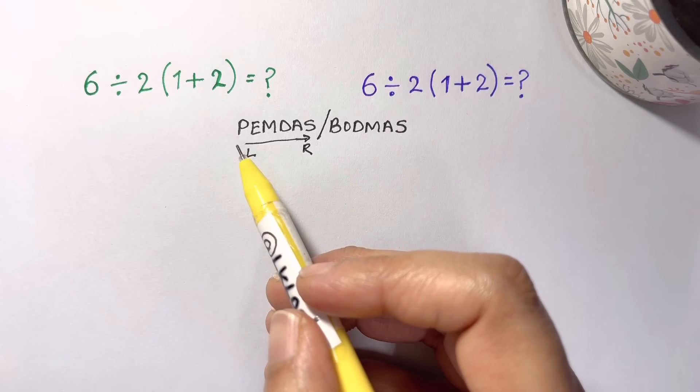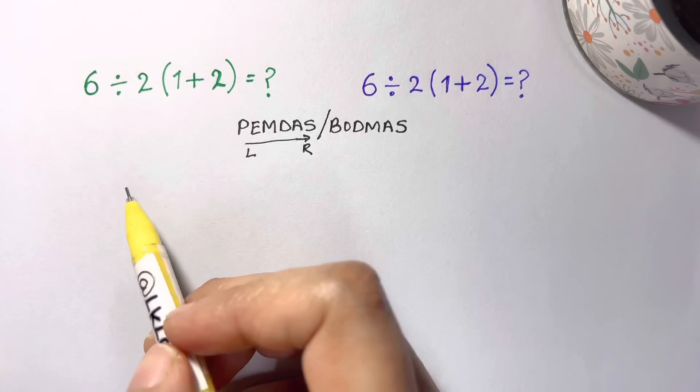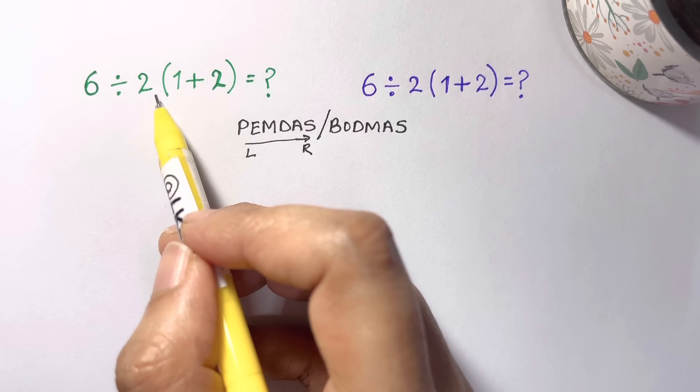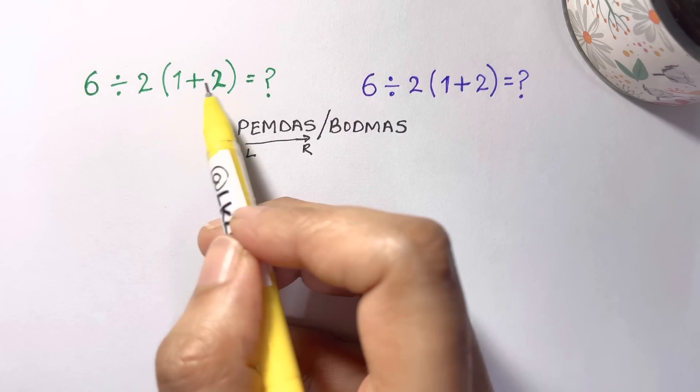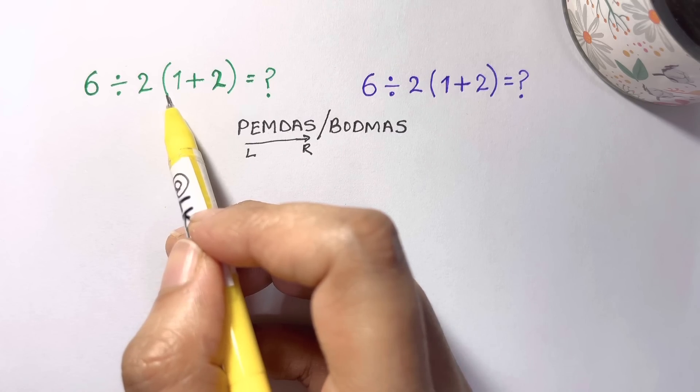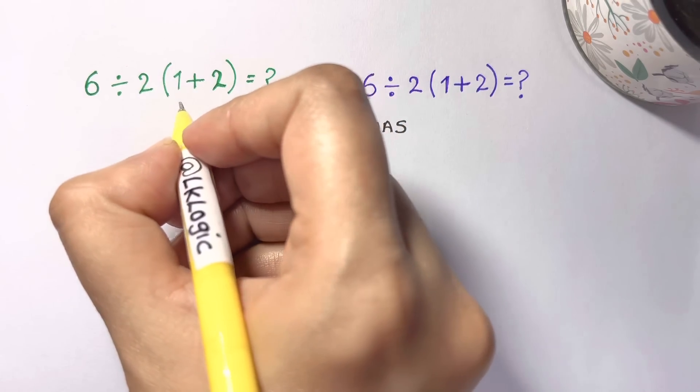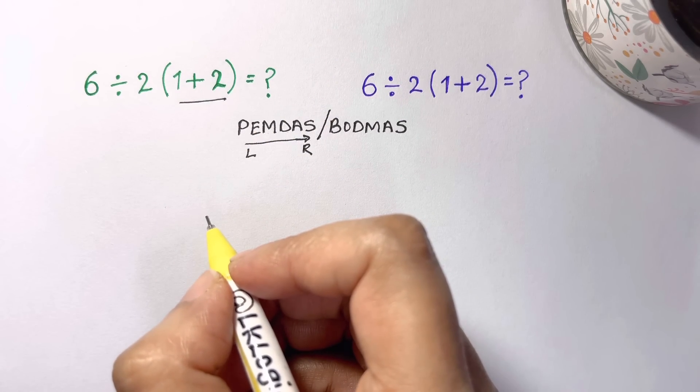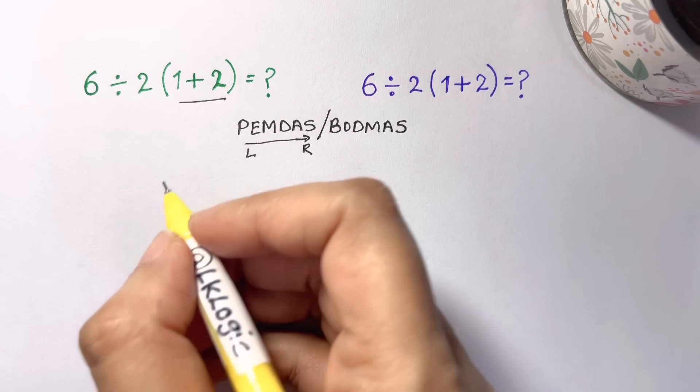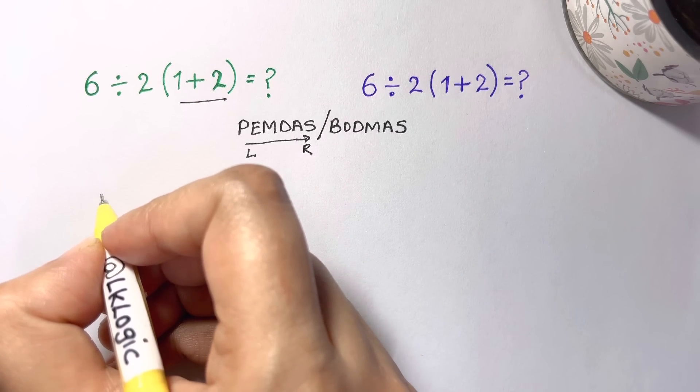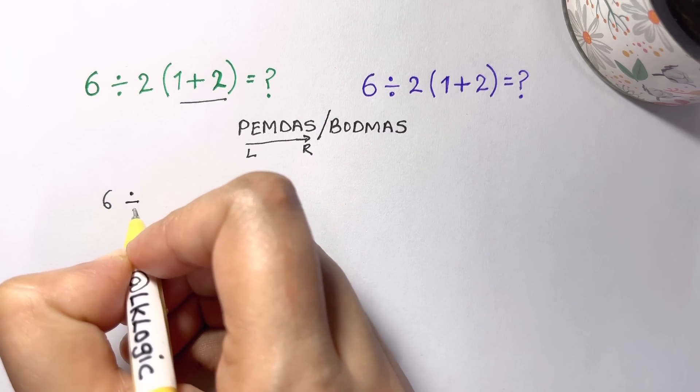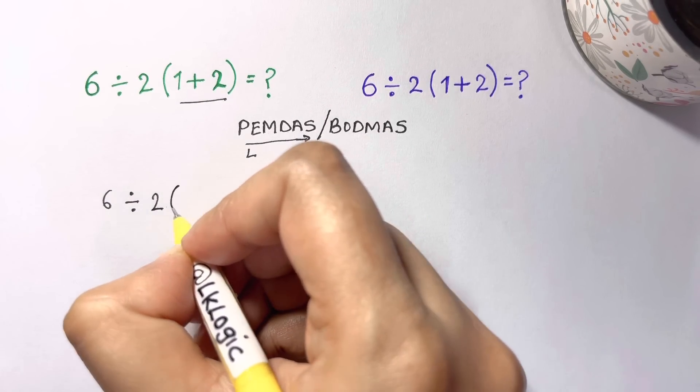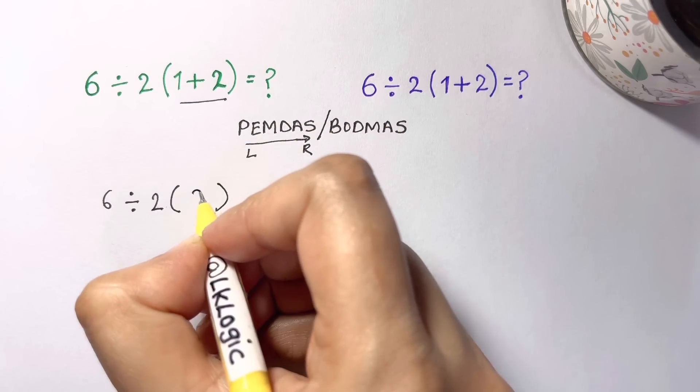The first step of the problem has no controversy, so we're going to solve that. This expression contains a parenthetical expression which must be evaluated first. One plus two is inside the parenthesis, so we'll evaluate one plus two to get three. So we have six divided by two parenthesis one plus two is three.